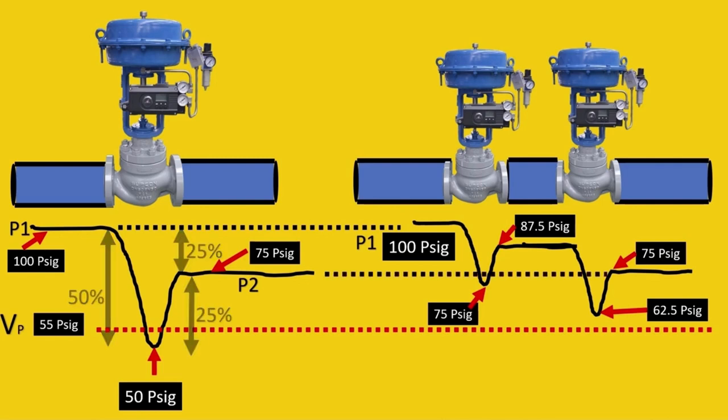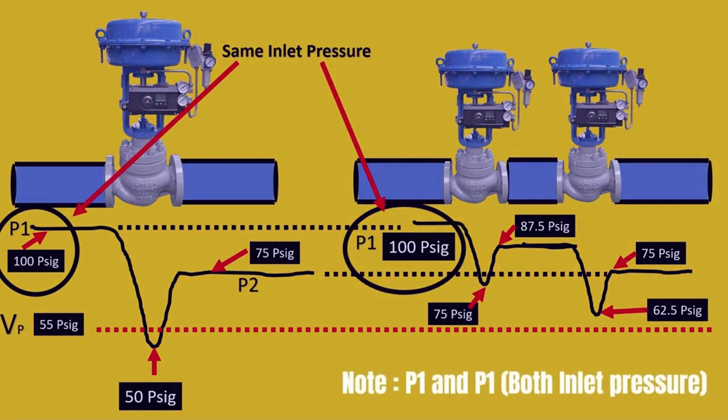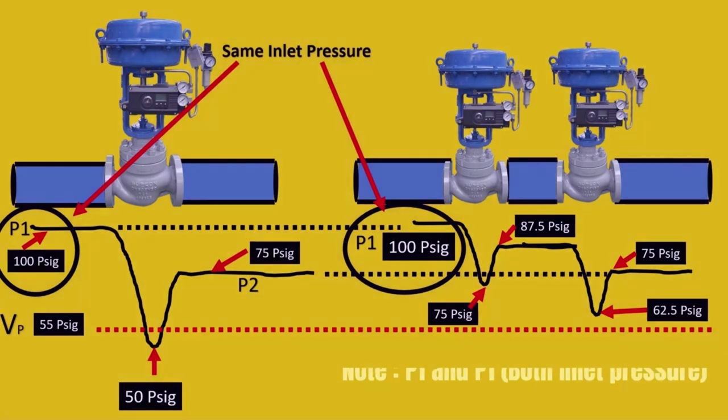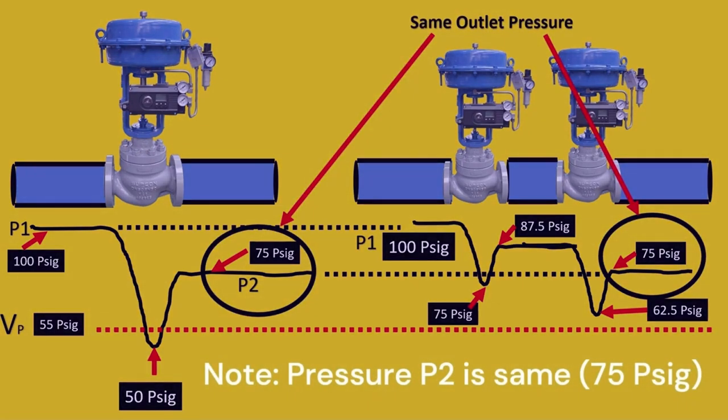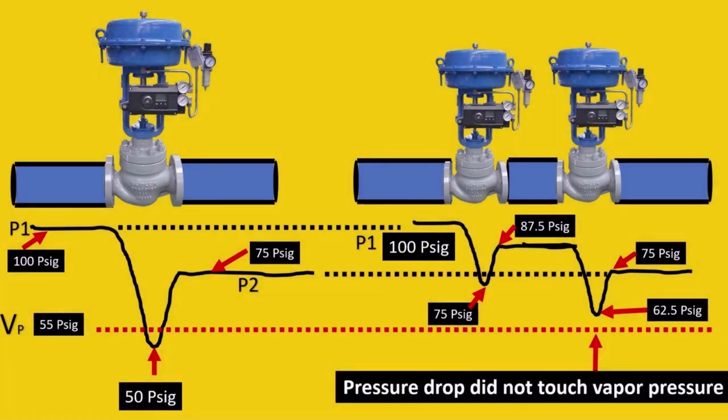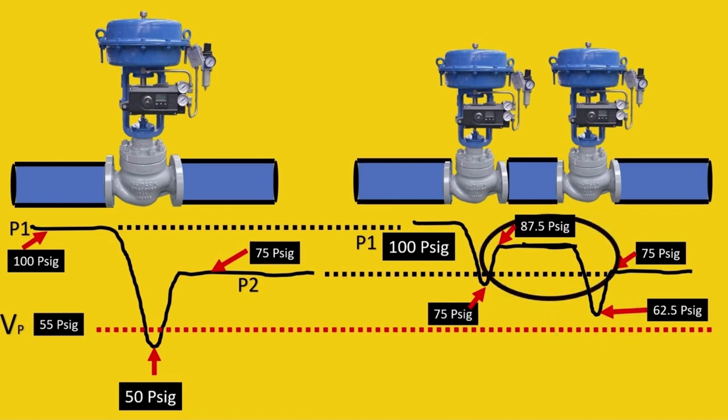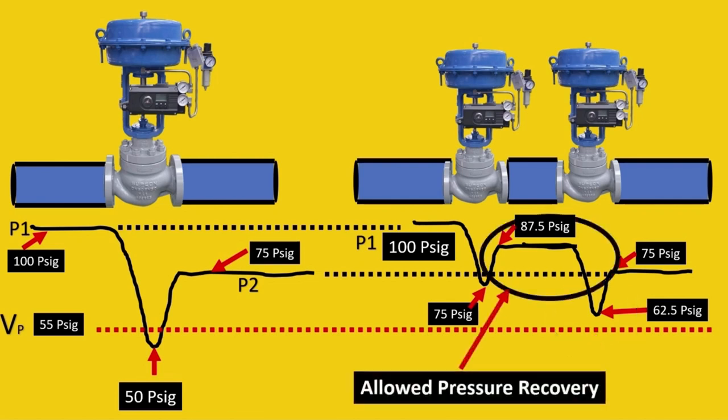If you notice, P1 and P2 are the same in both cases - 100 psig inlet and 75 psig outlet. However, the pressure curve in the second case did not touch the vapor pressure, so cavitation did not happen. This is because of giving time for pressure recovery to happen.